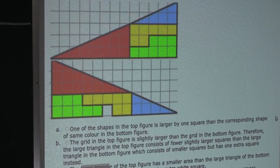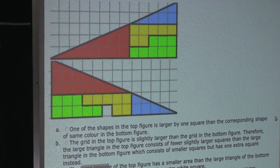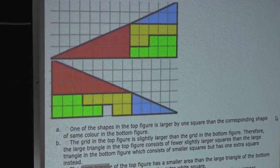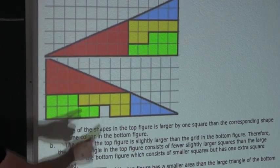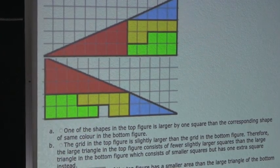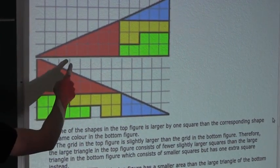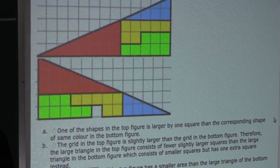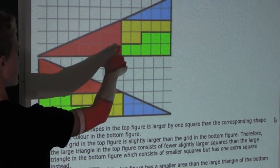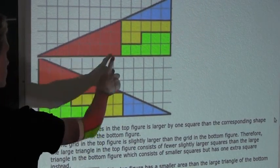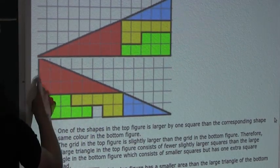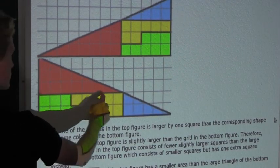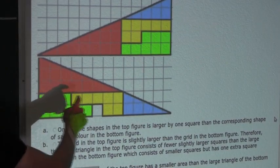Let's look at option A: one of the shapes in the top figure is larger by one square than the corresponding shape of the same color in the bottom figure. Let's check the red triangle. The height is 3 and the base is 8 in the top figure, and also height 3 and base 8 in the bottom figure — so the red triangle is the same.